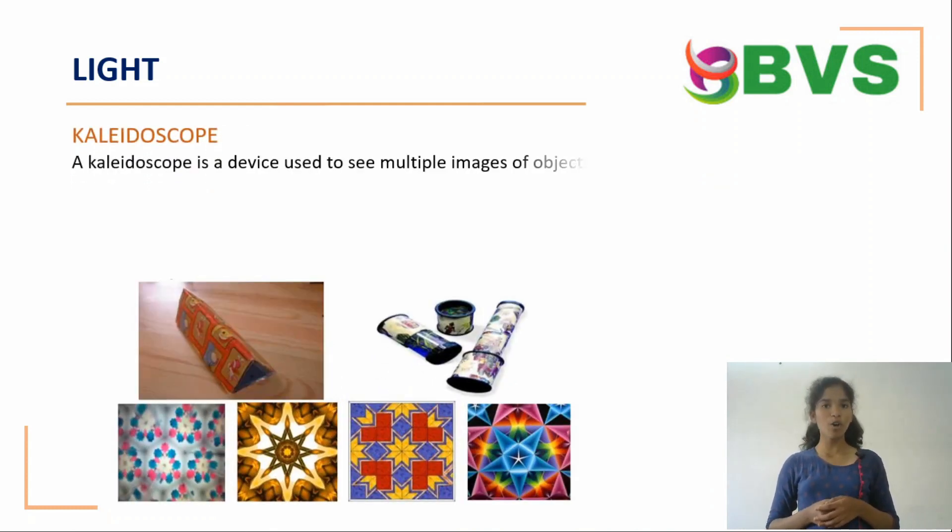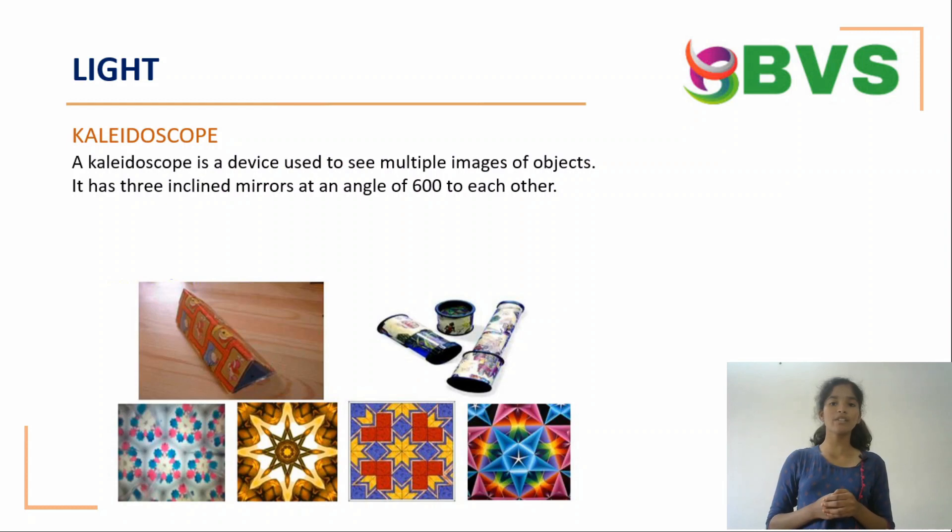Kaleidoscope. A kaleidoscope is a device used to see multiple images of objects. It has 3 inclined mirrors at an angle of 60 degrees to each other.